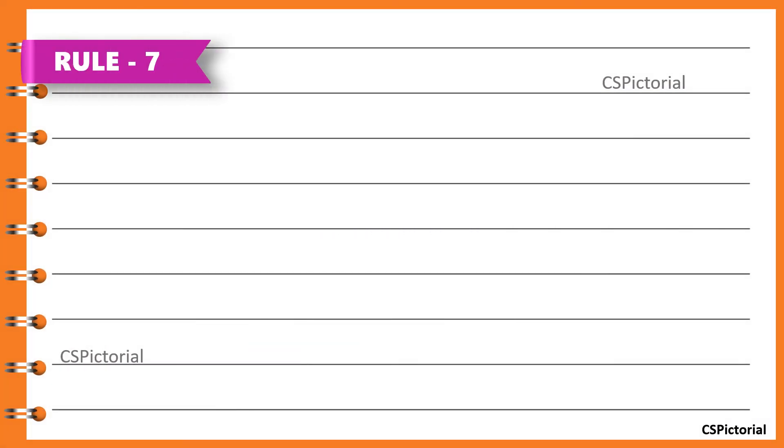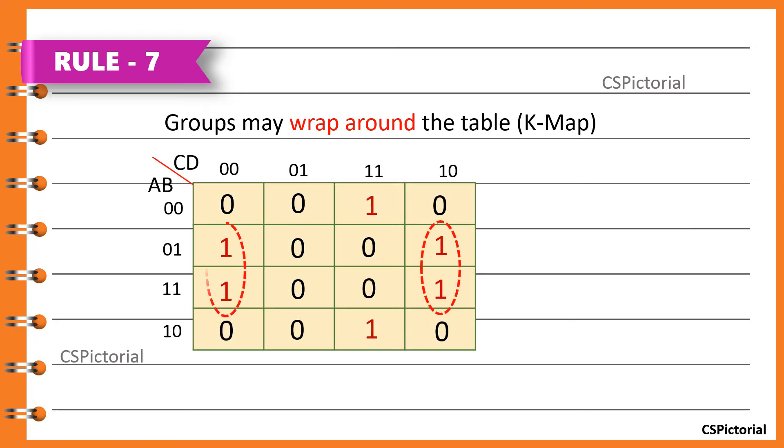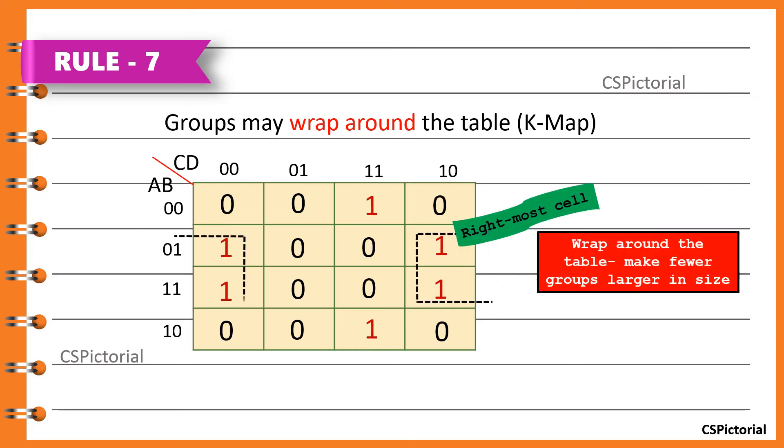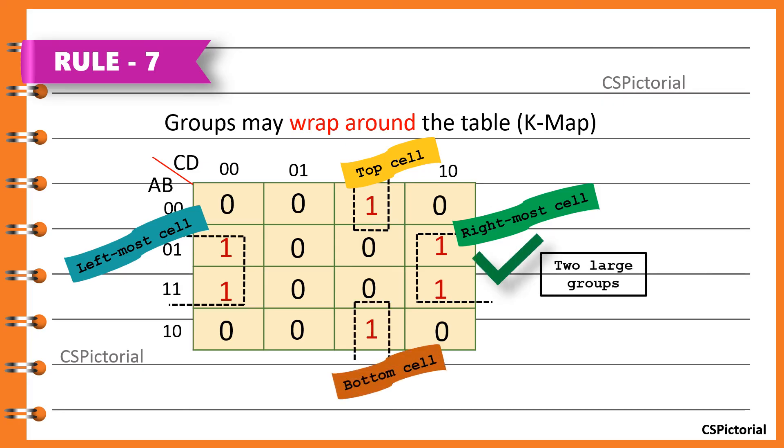Groups may even wrap around the table, that is the K-map. Instead of making smaller groups like this, the rightmost cell may wrap around with the leftmost cell to make a larger group. Similarly, the top cell of K-map could wrap around with the bottom cell to form a larger group. That way, we get fewer groups larger in size.